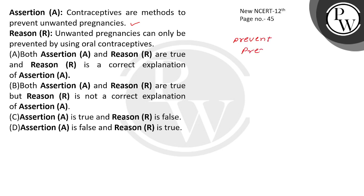Now we will see different methods of contraceptives, like the natural method. In the natural method there are periodic abstainments, withdrawals, coitus interruptus, and barrier methods, which include condoms, diaphragm, and then you have IUDs — intrauterine devices — which are inserted by a doctor or nurse in the uterus through the vagina.